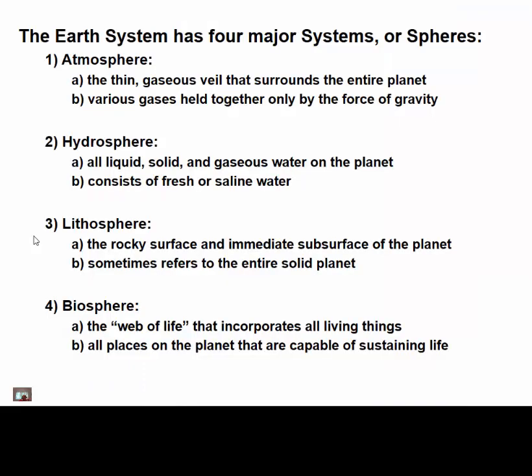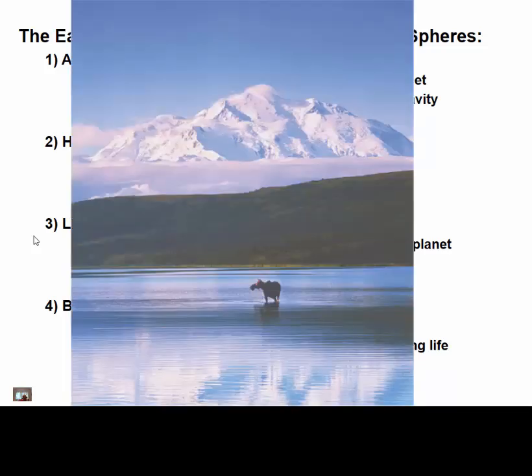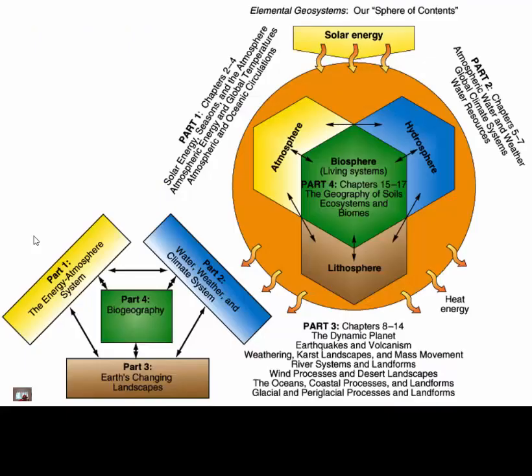Earth systems have four major components: the atmosphere — the gas around the planet — the hydrosphere, the lithosphere, and the biosphere. The biosphere is especially important because it is what differentiates physical geography from earth science. You can see examples of these here.